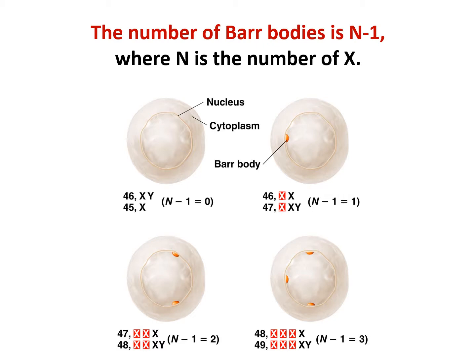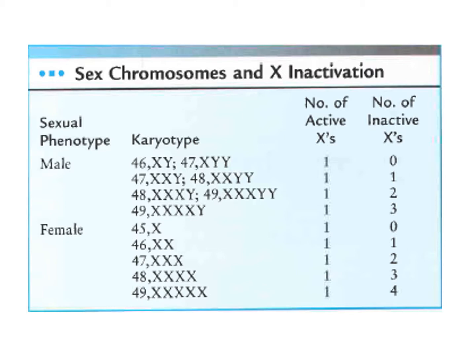The concept is that the number of Barr bodies equals N minus one, where N is the number of X chromosomes. Normal males: no Barr body. Turner female (45X): no Barr body. Normal female (46XX): one Barr body and one active X. Klinefelter (XXY): one Barr body and one active X. A female with three X chromosomes: one active and two inactive. Tetra X: three Barr bodies and one active X. No matter how many X chromosomes are present, just one stays active — all the rest are inactivated.